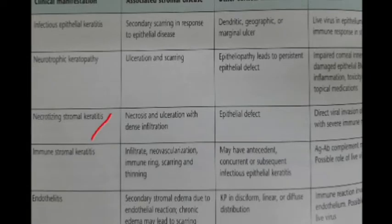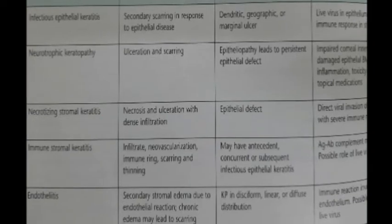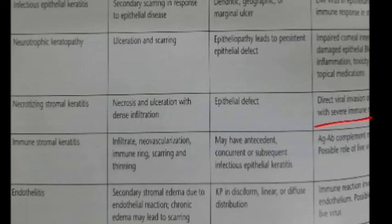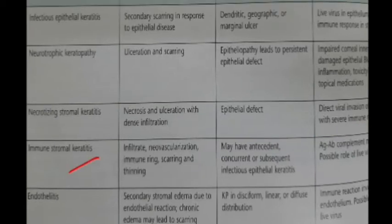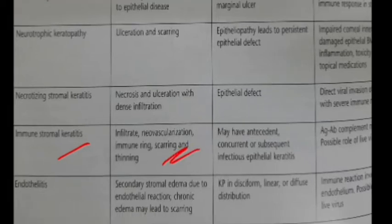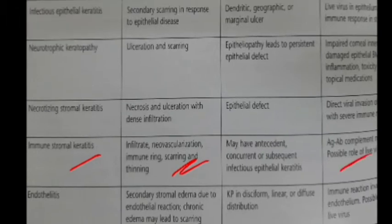Moving on to necrotizing stromal keratitis — there is necrosis and ulceration with dense infiltration in the stroma, and there is an associated epithelial defect. This is due to direct viral invasion of the stroma. In immune stromal keratitis, there is infiltrate, neovascularization, immune ring, scarring, and thinning of the stroma, but there will not be an epithelial defect; this is due to an antigen-antibody reaction.